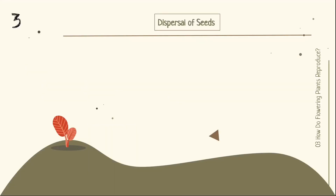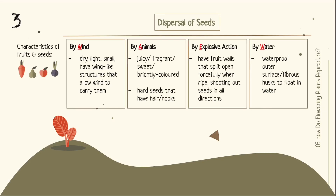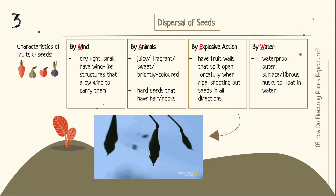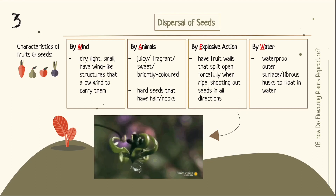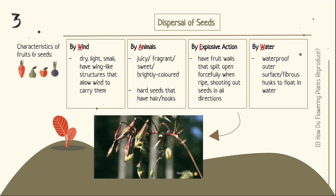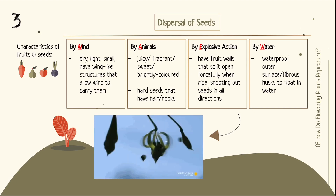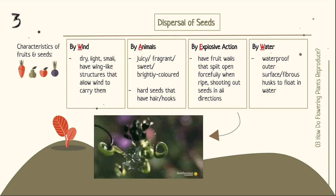When a plant goes through fertilisation and seeds form, how are the seeds carried from one place to another? Plants disperse their seeds by wind, some by animals, some by explosive action, and some by the flow of water down rivers. Please pause the video to read about the different characteristics that plants with different dispersal methods have.